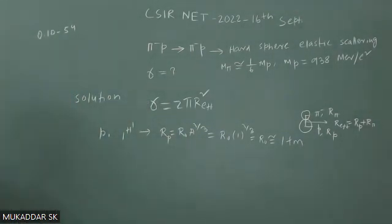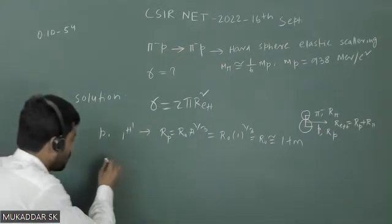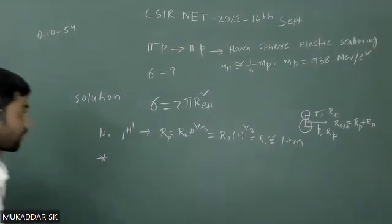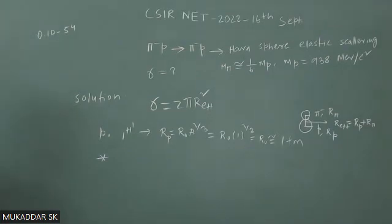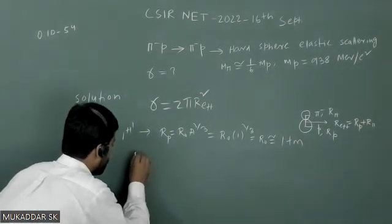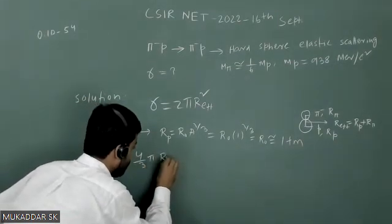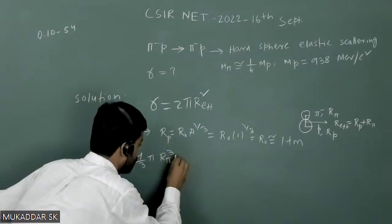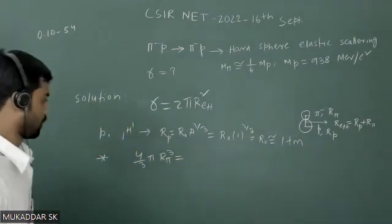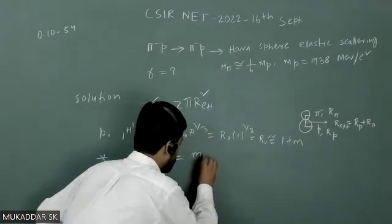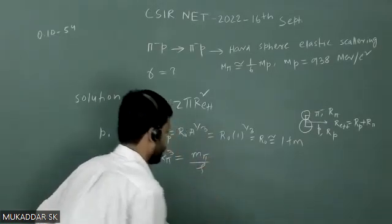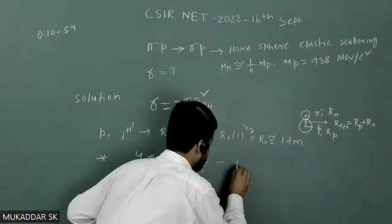Now, we know that volume is nothing but mass divided by density. So I can write that volume of π⁻ particle will be (4/3)πr_π³, that will be the mass of pi particle divided by its density. And let us assume this is equation number 1.